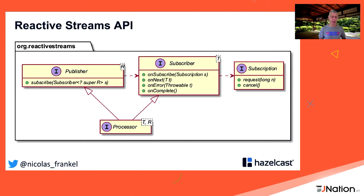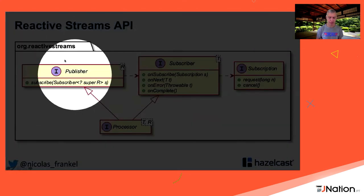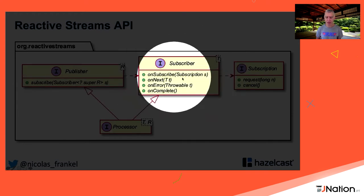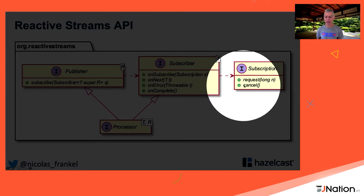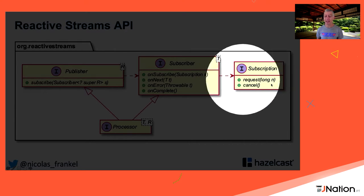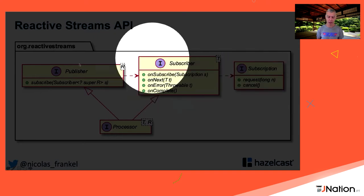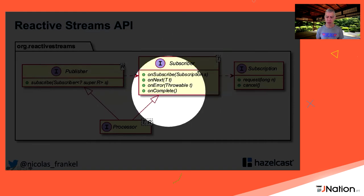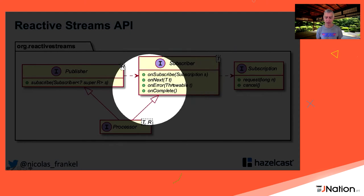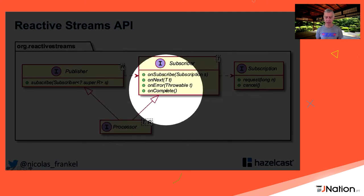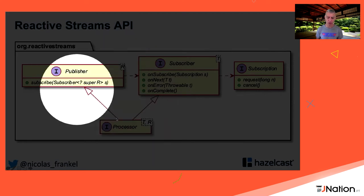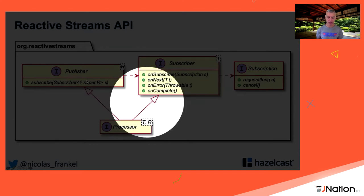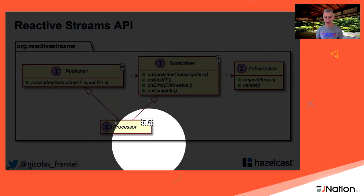The basic Reactive Streams API is actually very simple — just four interfaces. You have the Publisher, which subscribes to a Subscriber. The Subscriber has four methods: onSubscribe, onNext, onError, and onComplete. The Subscription itself can request the next N items or cancel — this is where back-pressure comes in, so a fast producer won't overflow a slow subscriber. There is also a Processor, which is both a Publisher and a Subscriber, sitting in between steps of the chain.